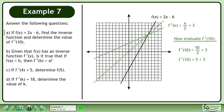10 divided by 2 is 5. F inverse at 10 equals 8. The point exists on the inverse graph.